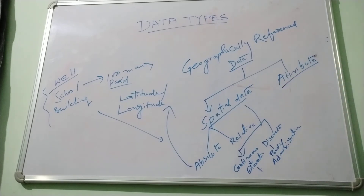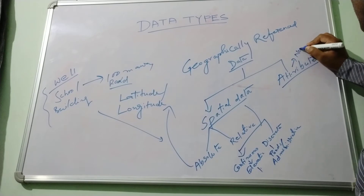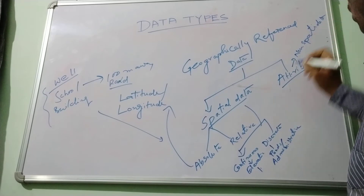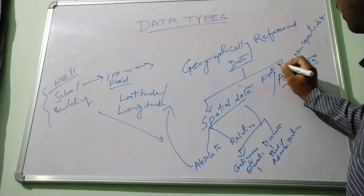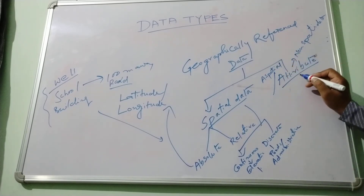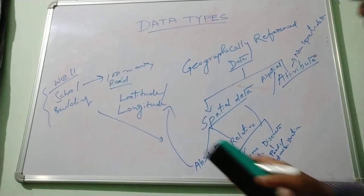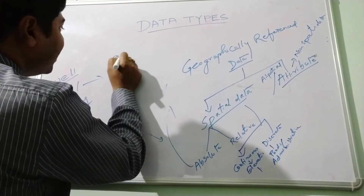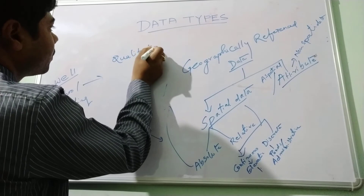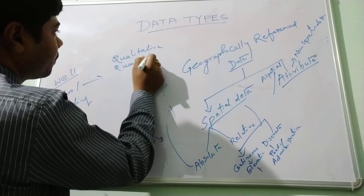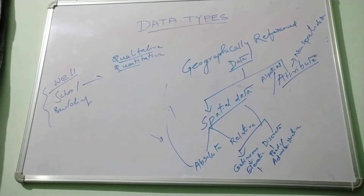Moving to attribute data — it is also known as non-spatial data. This data contains the characteristics of spatial features, and these characteristics may be qualitative or quantitative. Attribute data can be stored in the GIS platform in different ways, because there are a number of types of data that we can use in GIS, like text type, integer, date or time, or binary large object.